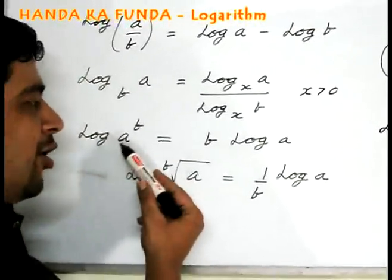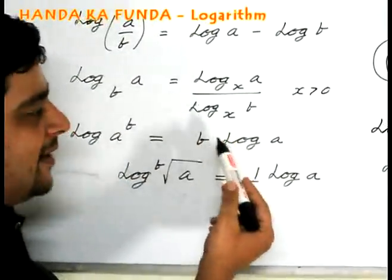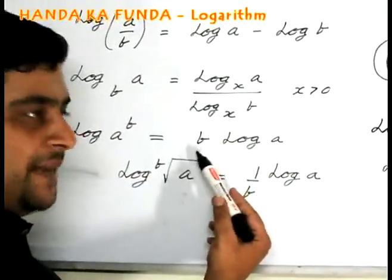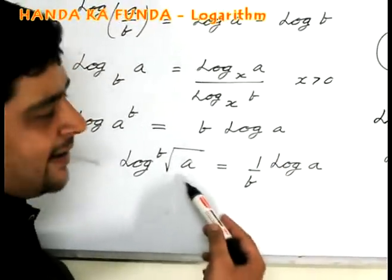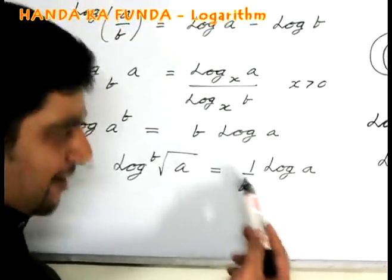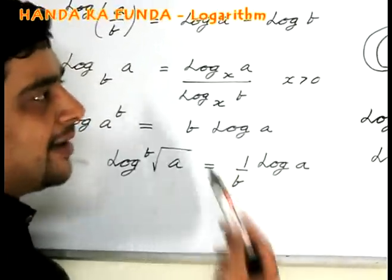If I am given log of a to the power of b, then that translates to b log a. If I have to find out log of bth root of a, then that translates to 1 by b log a.